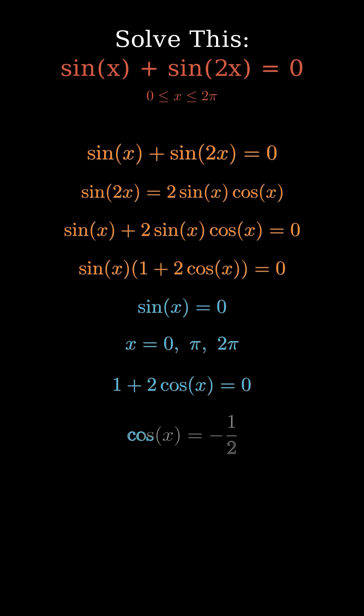We isolate cosine x, subtract 1 from both sides, then divide by 2. That gives cosine x equals negative 1 half.